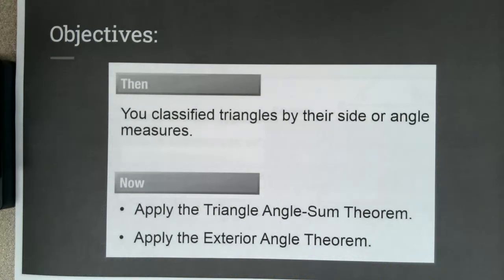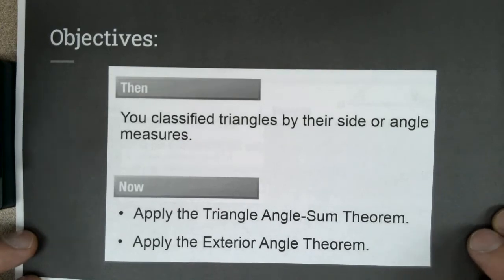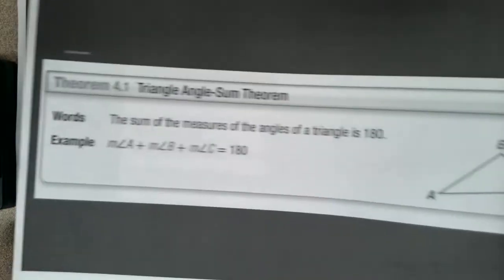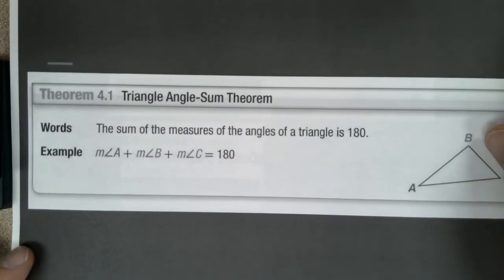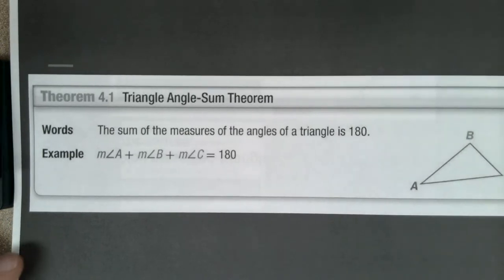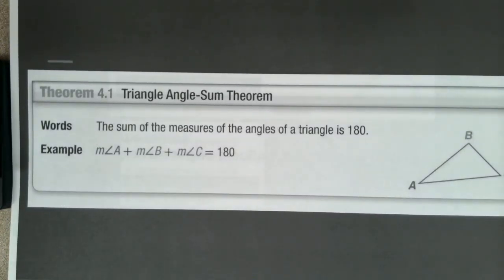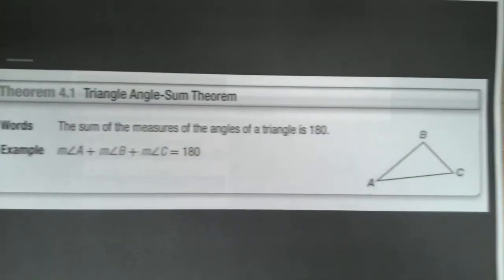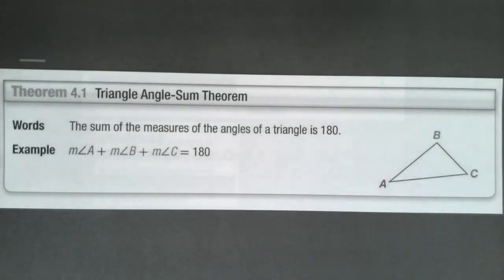And then we're also going to talk about the exterior angle theorem. So two theorems that we can apply to triangles. Let's start with the triangle angle-sum theorem. This is probably something that you've seen before. Basically what it says is if we've got our three angles in the triangle, the sum of the three angles is always going to be 180 degrees. So angle A plus angle B plus angle C will equal 180.